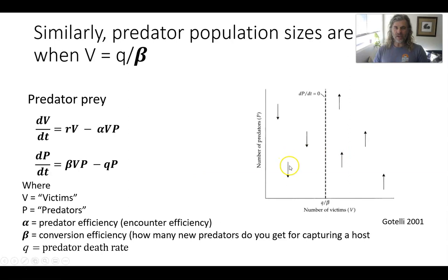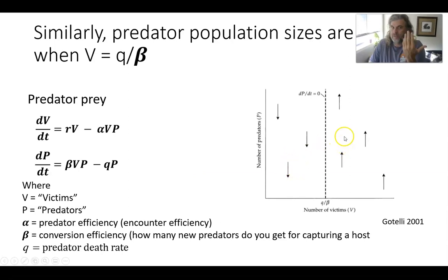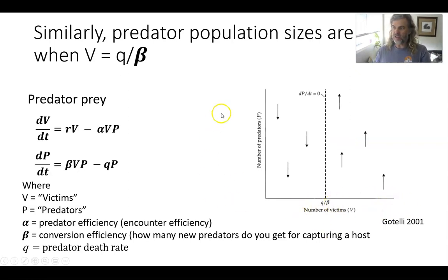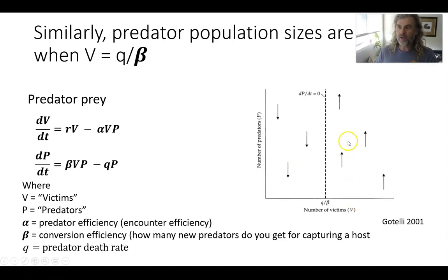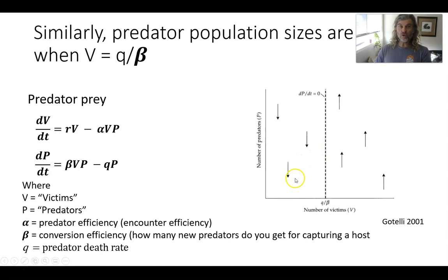You can do the same thing for the predators — on a different axis because they're different species. The prey are on one axis, the predators on the other. Likewise, if there are a lot of prey, then you can have an increasing number of predators — lots of things to eat. But if there are very few prey, you would see the predator population decrease.